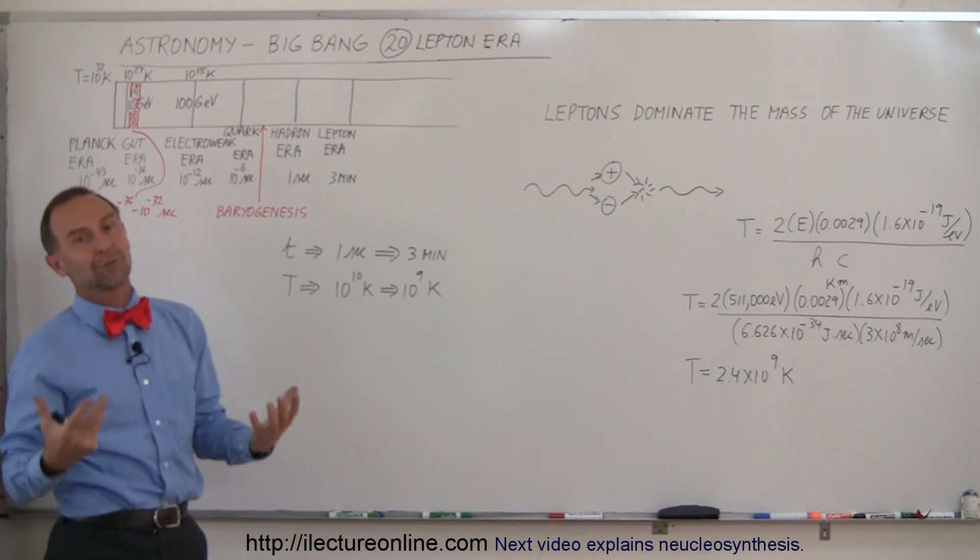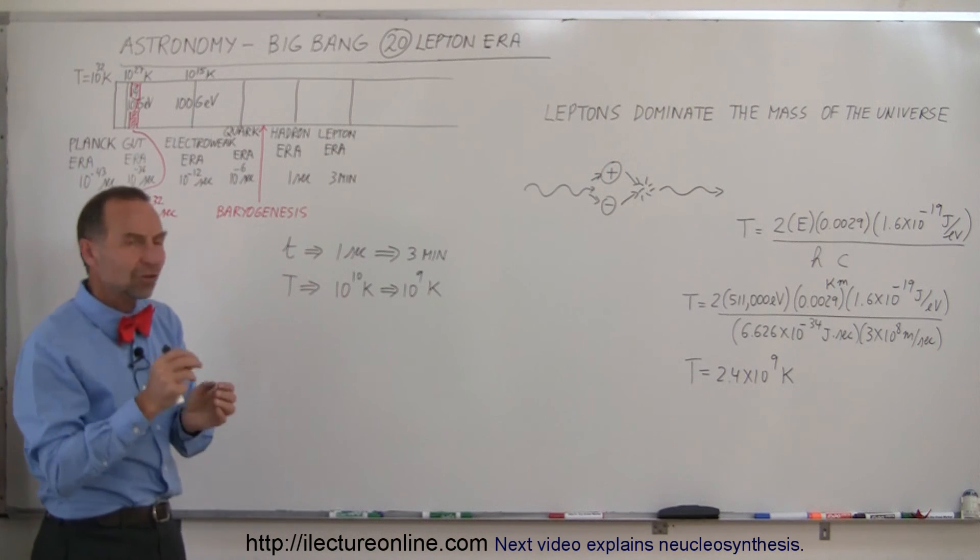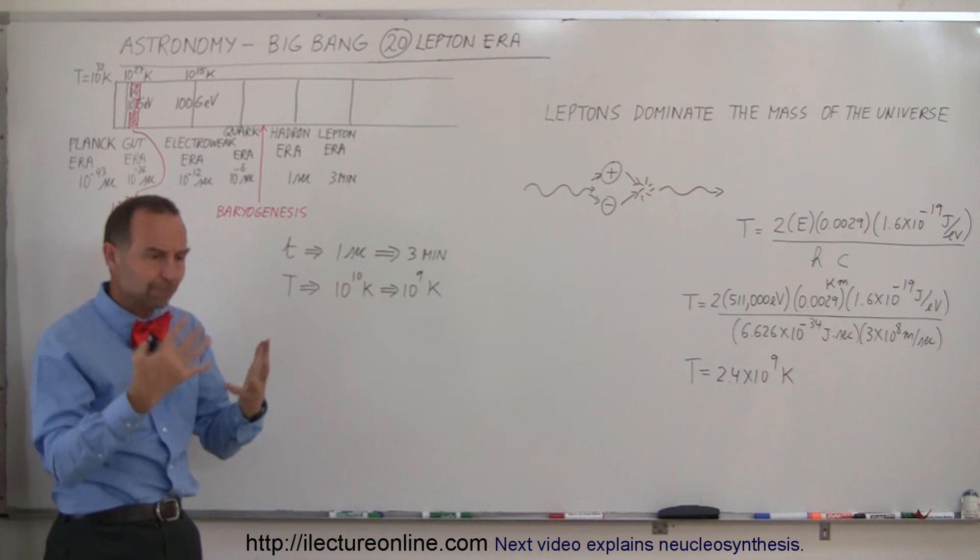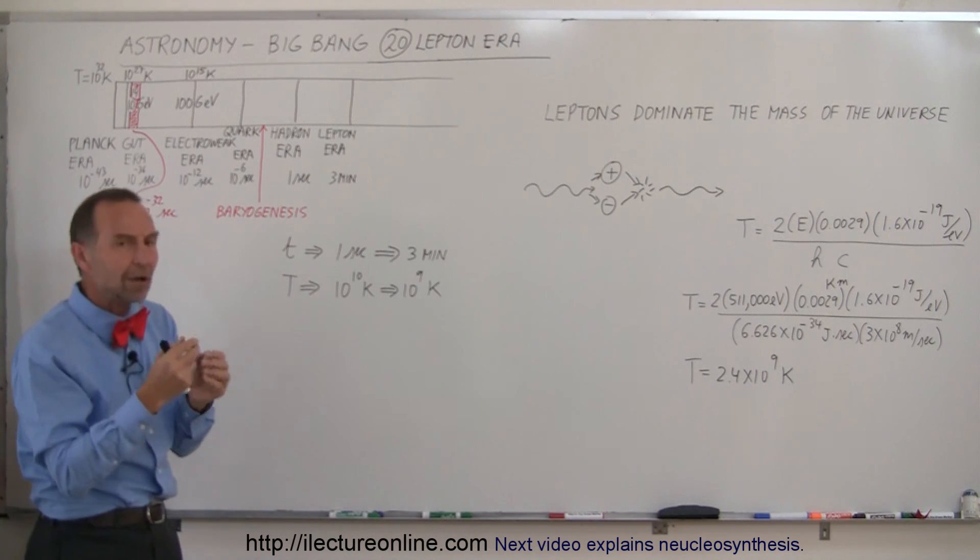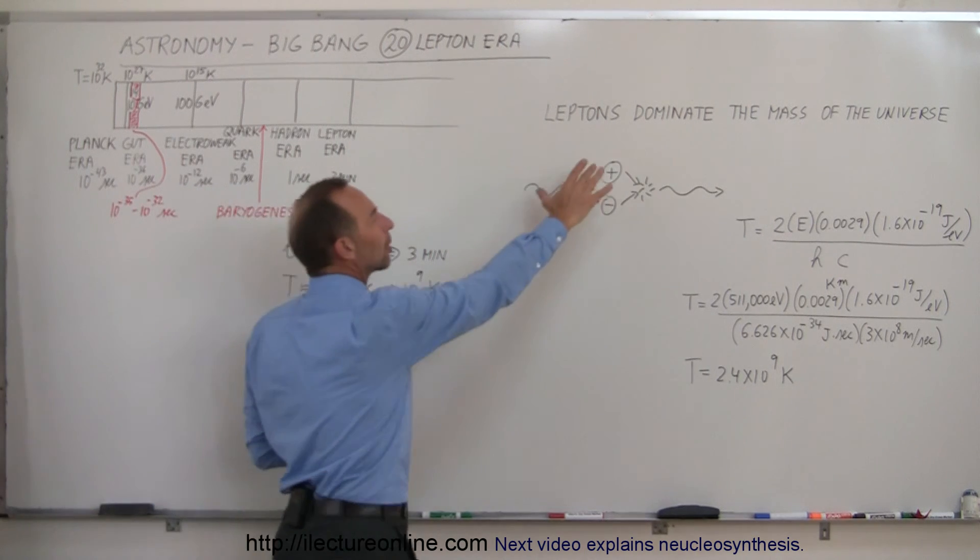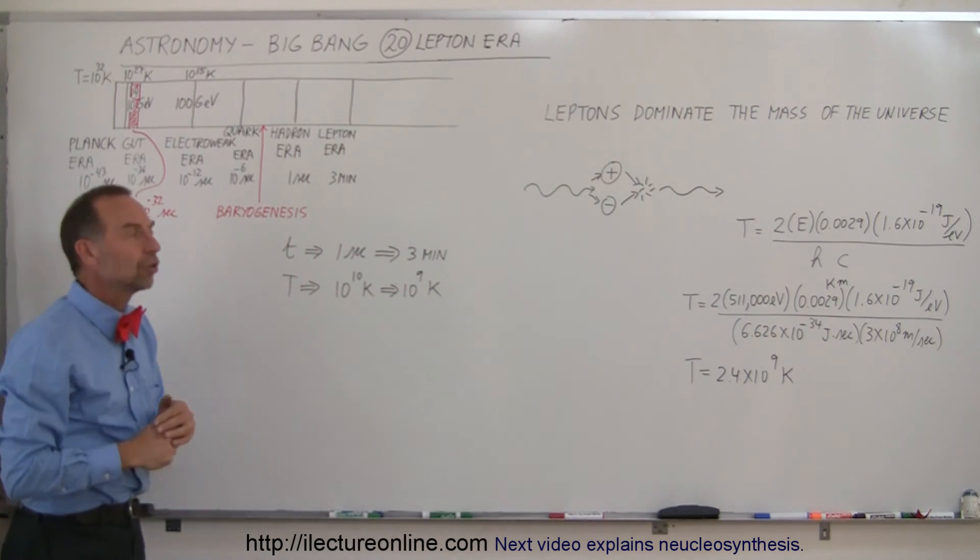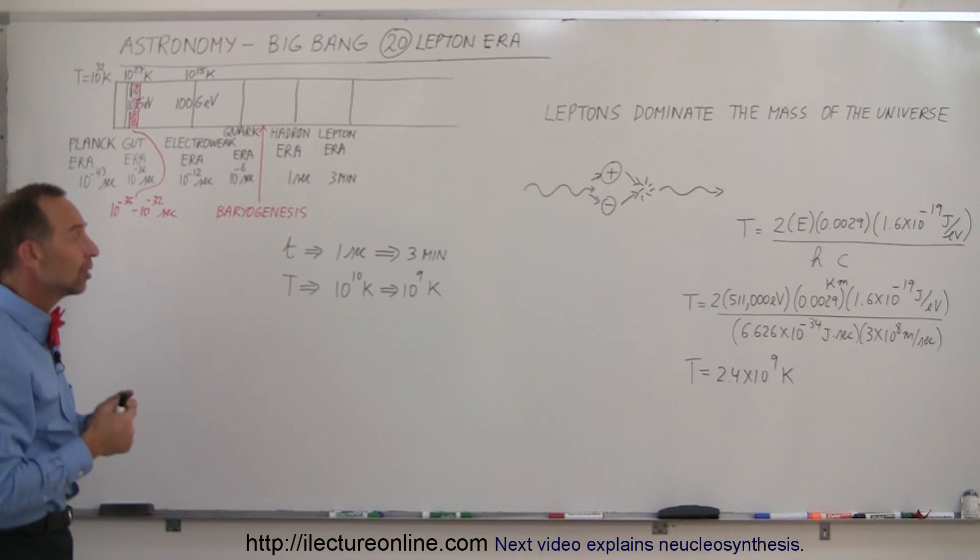Without that, matter wouldn't exist, and of course, we wouldn't exist either. So just like during the baryon genesis, for some reason, something was thrown off, a slight amount more particles were created than anti-particles, which then were the leftover leptons in the universe that now make up the atoms in the universe.